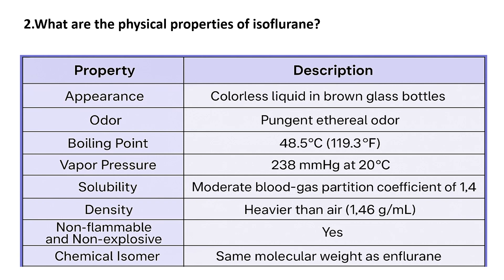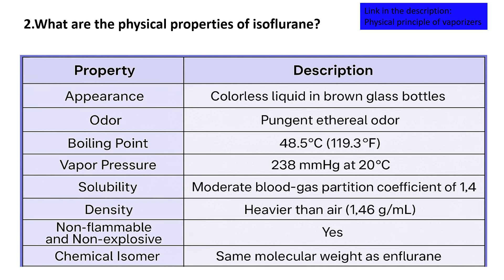The boiling point of isoflurane is around 48.5 degrees Celsius, which facilitates its vaporization for use in anesthesia. At 20 degrees Celsius, isoflurane has a vapor pressure of 238 millimeters of mercury, allowing it to be effectively vaporized and administered through a vaporizer. Isoflurane has a moderate blood-gas partition coefficient of 1.4, providing a balanced speed of induction and recovery. It is heavier than air, with a density of approximately 1.46 grams per milliliter.